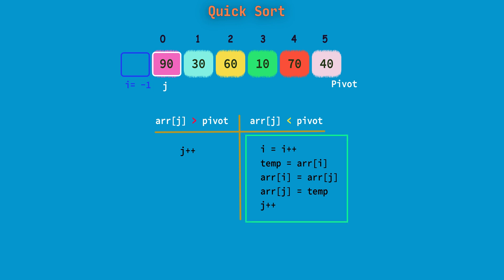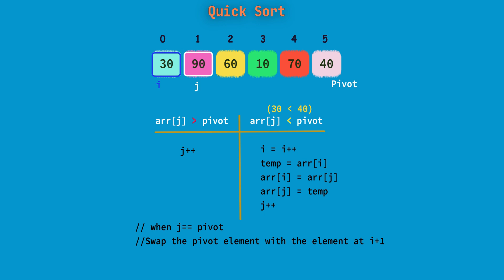Here in this example, 90 is greater than 40, hence we will move only j. And for the next comparison, 30 is less than 40, so we will increment i. So it will point to 0. Then we swap the elements at i and j. And this iteration will continue and next we will move j.